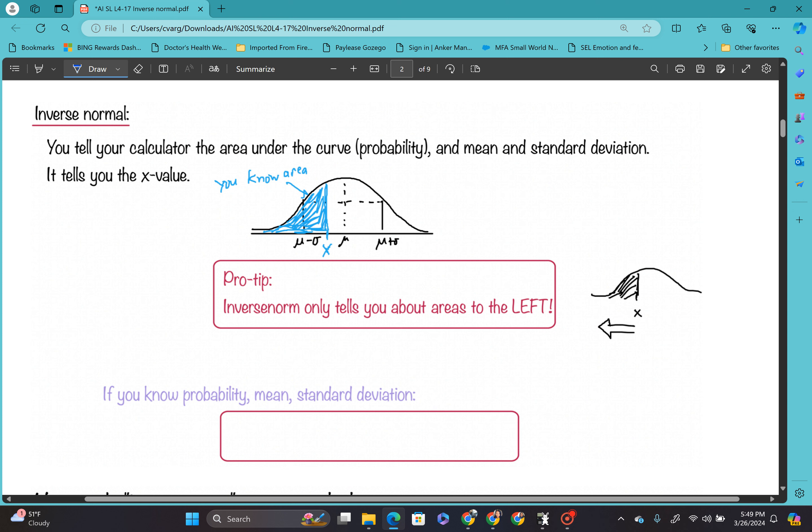So the big thing to remember about inverse norm is you need to know a couple of things. You need to know the area under the curve, aka the probability. You need to have the mean and you need to have the standard deviation. And if you have that, then it gives you the x value.